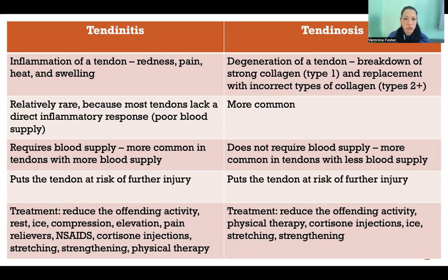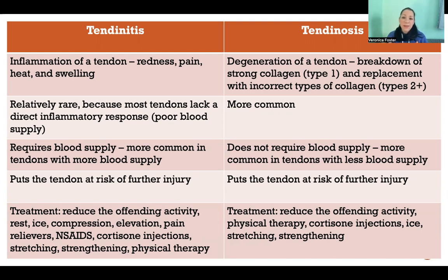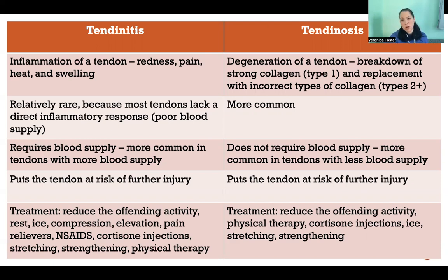If we can't make the really strong, dense, tough Type 1 collagen fast enough to keep up with the demand, then we put in the shoddy materials instead. The problem is that over time, as this continues to happen, that tendon gets transformed from a tendon made of Type 1, very strong collagen, to a tendon made of other types of weaker collagen.